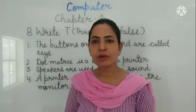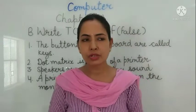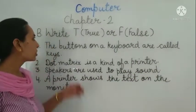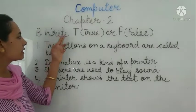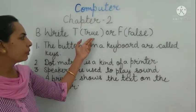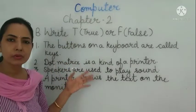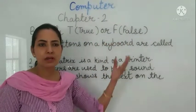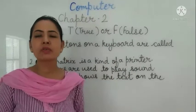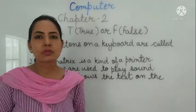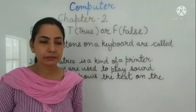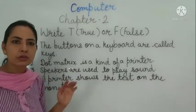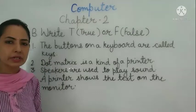First we will read the question, what we have to do in the question, then we will complete it. Question number B is write T for true if your statement is true, then you can write T, and F for false. If your statement is false, you can write F here. First we will read the statement to know that it is false or it is true.